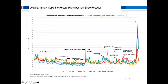Volatility saw a significant spike across four different asset classes: US stocks in blue, emerging market stocks in green, treasuries in red, and currencies in gold. With the coronavirus, we saw a spike in the VIX up over 80 — the largest print on the VIX index ever recorded. We're at about 40 right now. It was a significant spike in volatility across multiple asset classes simultaneously, though it has fallen from that 80 peak.